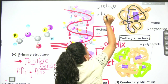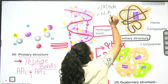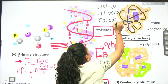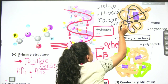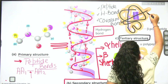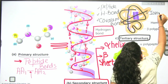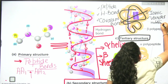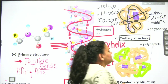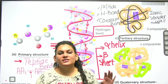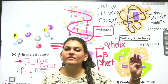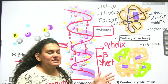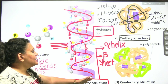The bonds present in the tertiary structure are: (1) peptide bond, (2) hydrogen bond, (3) covalent bond, (4) ionic bond, and (5) van der Waals forces. All five of these bonds — peptide bond, hydrogen bond, covalent bond, ionic bond, and van der Waals forces — are present in the tertiary structure.